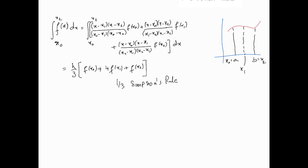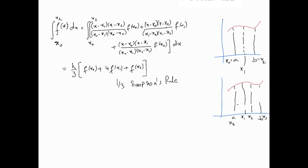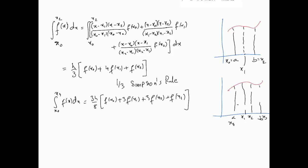We can also use a cubic Lagrange polynomial approximation. In that case we have four equally-spaced points: x0, x1, x2, x3, and the integral runs from x0 to x3. The result is the three-eighths Simpson's rule: (3h/8) · (f(x0) + 3f(x1) + 3f(x2) + f(x3)).